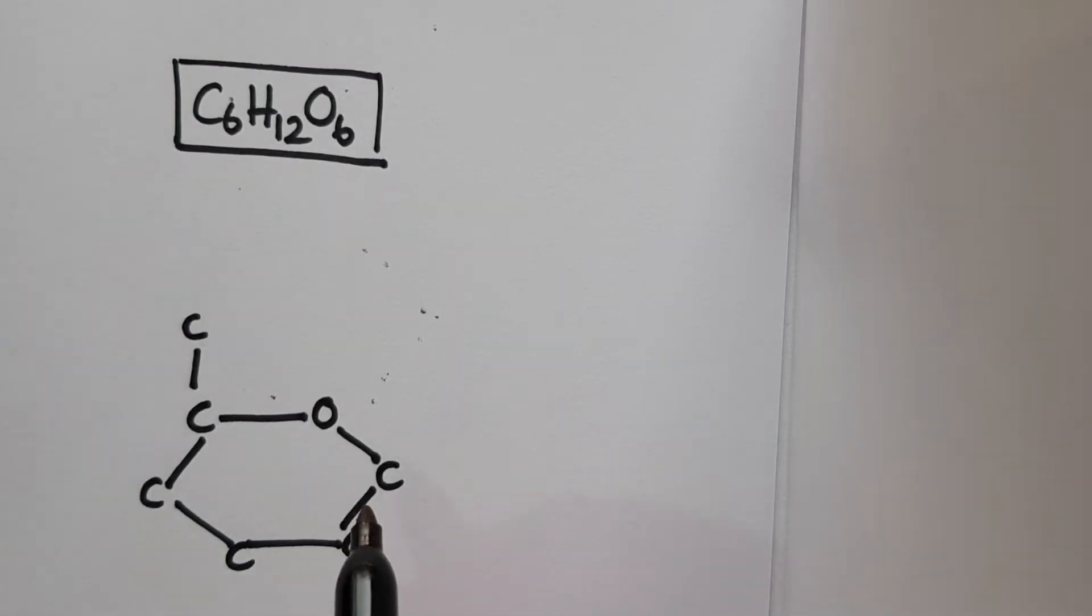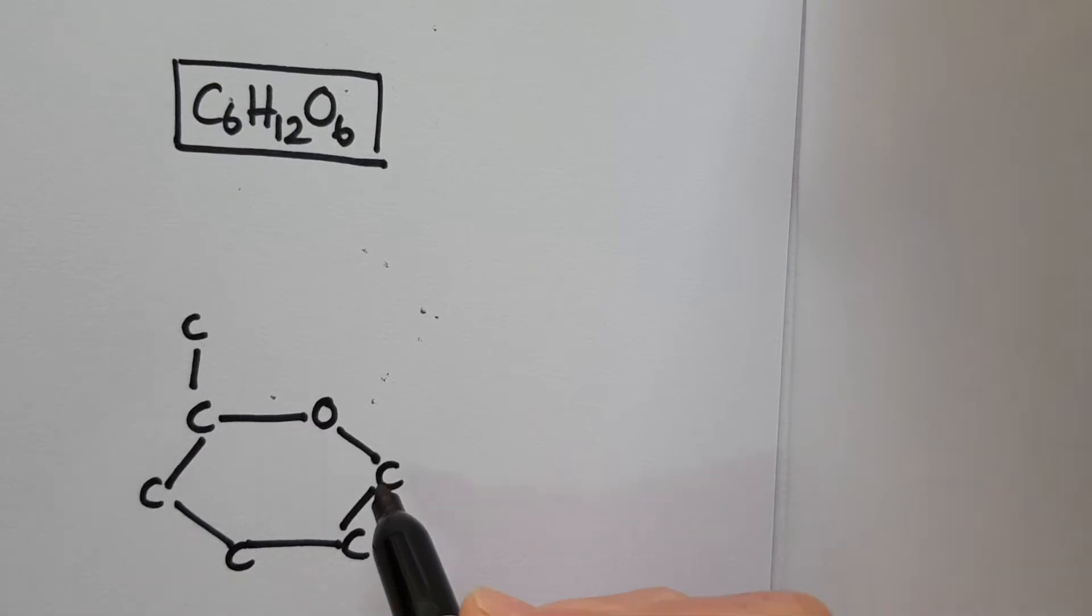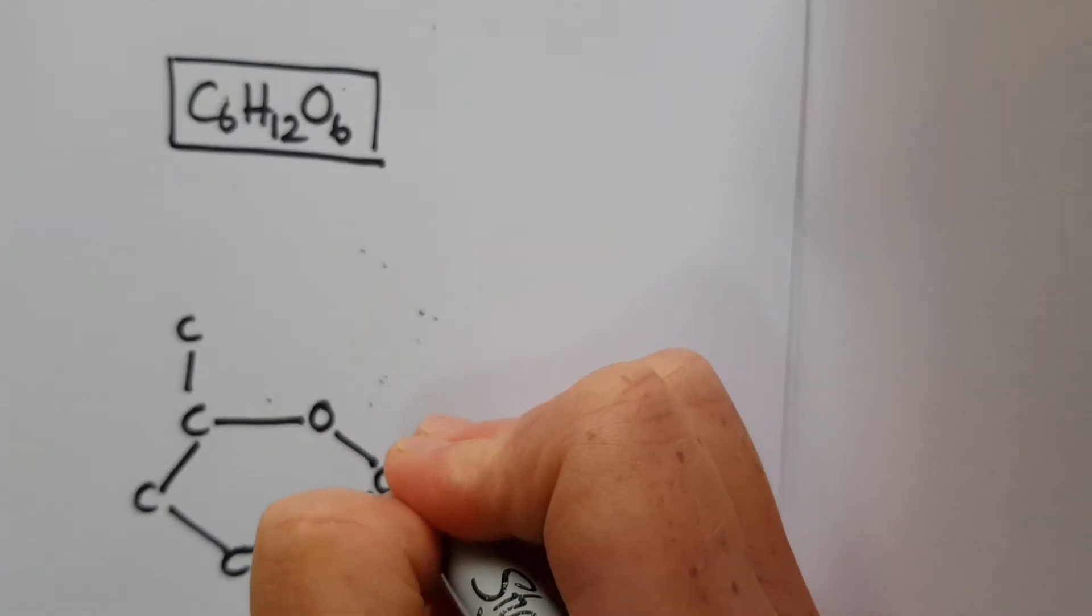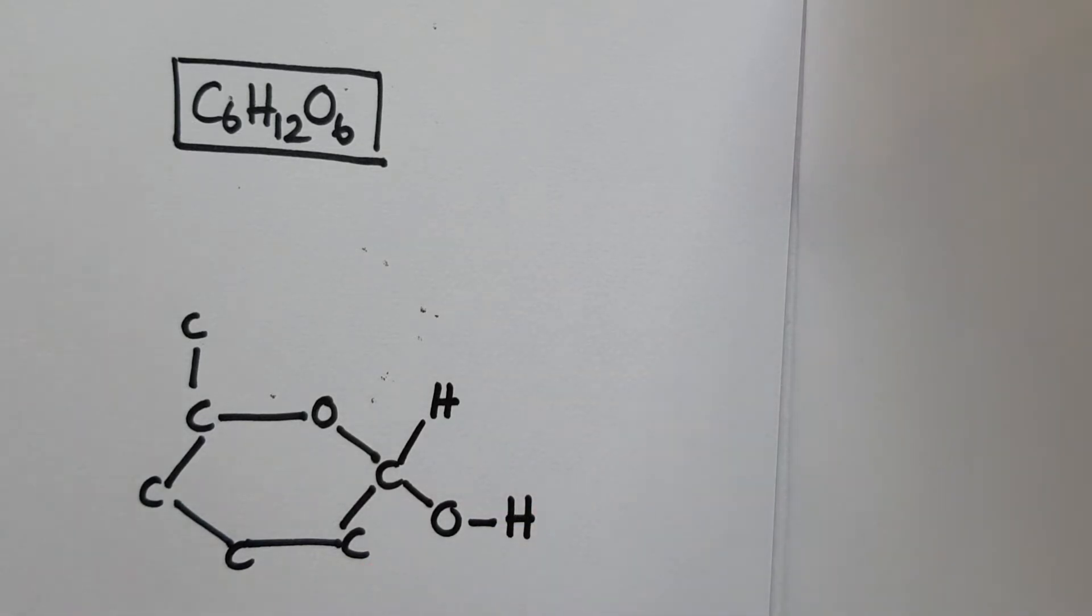And now what we're left with is some space to put the rest of our hydrogen and oxygen atoms. You may remember from your GCSE chemistry that oxygen can form two covalent bonds, as you can see here. But carbon can form four covalent bonds. So there's some spaces here left to be occupied, and they are occupied with hydrogens and hydroxyl groups. So a hydroxyl group is an oxygen and a hydrogen.